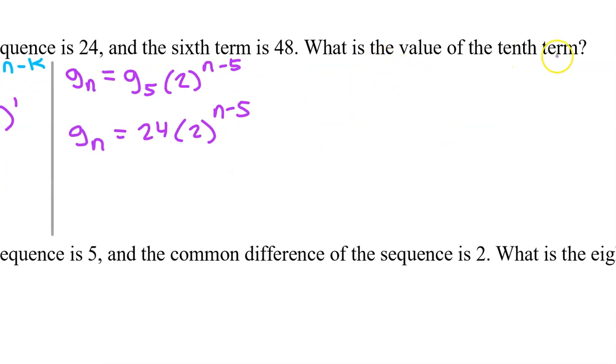In other words, what is the value of g_10? That will be 24 times 2 to the 10 minus 5. I'm just going to go ahead and put 5. So, this is the value of g_10. We just need to simplify this as much as we can. Memorize that 2 to the fifth power is 32.